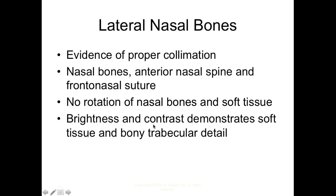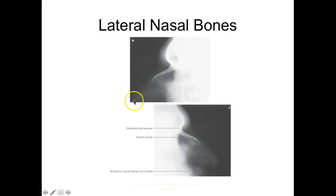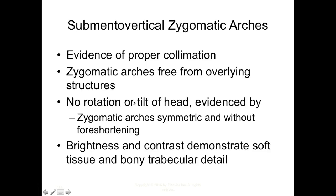For lateral nasal bones: proper collimation — 3x3. Nasal bones, anterior nasal spine, and frontal-nasal sutures all displayed. No rotation of the nasal bones and soft tissue, and proper penetration. One example shown is properly positioned but needs tighter collimation; the other has the tip of the nose clipped off and the centering needs to be fixed.